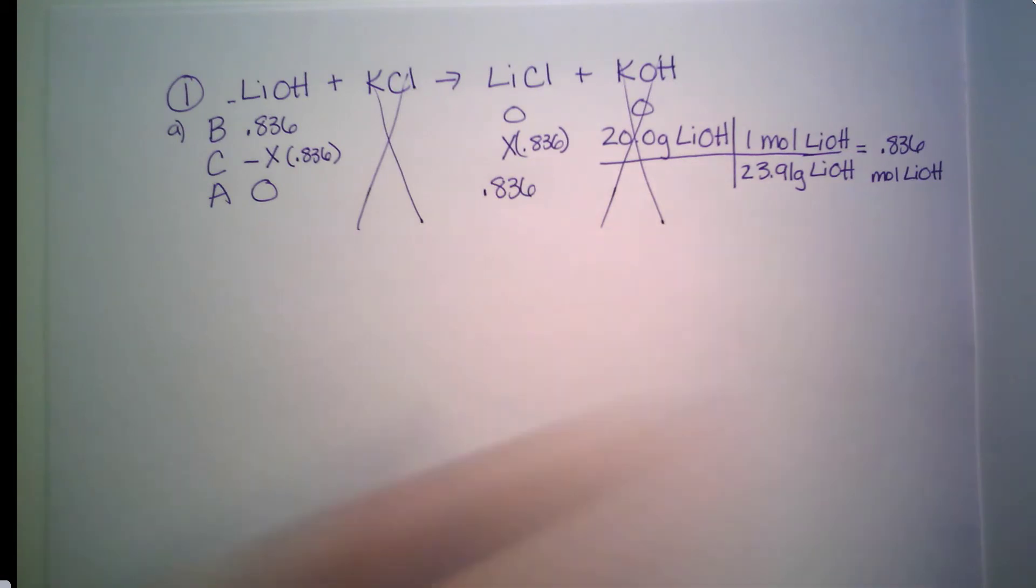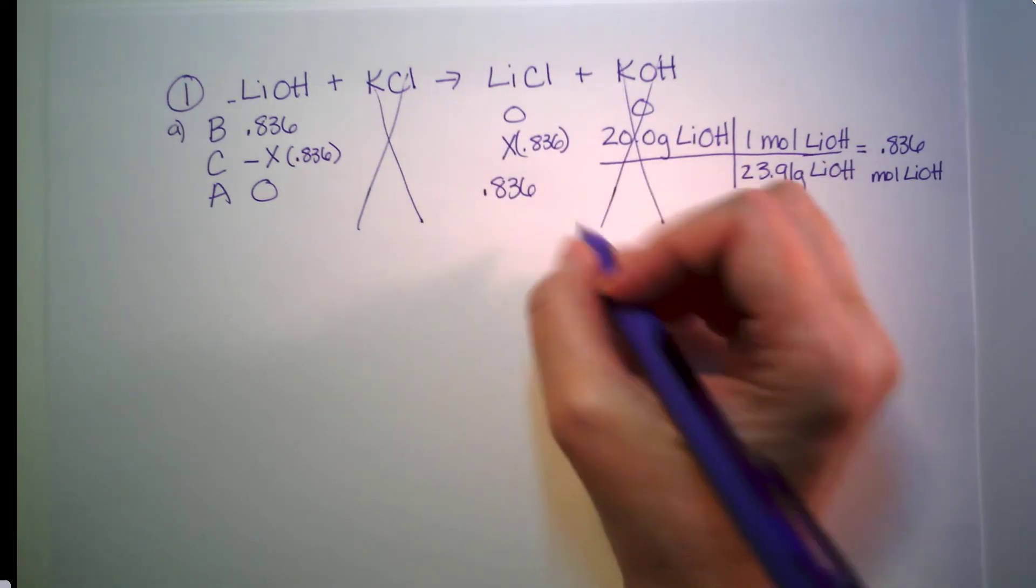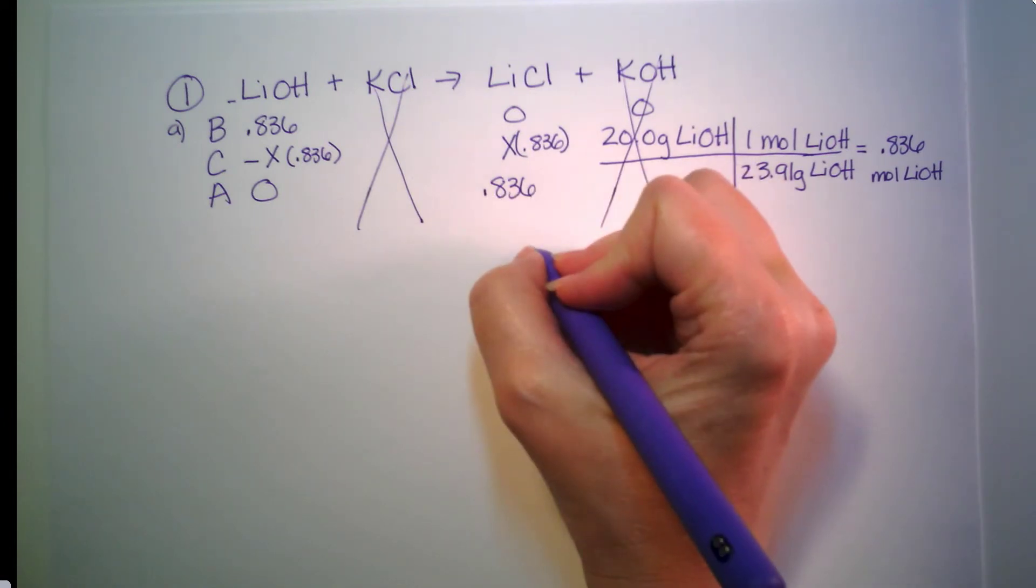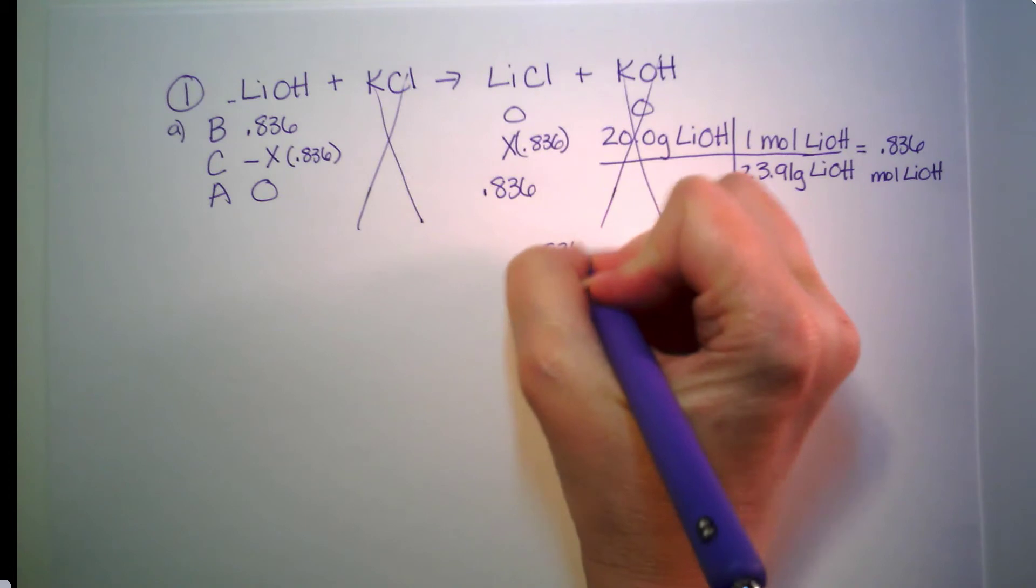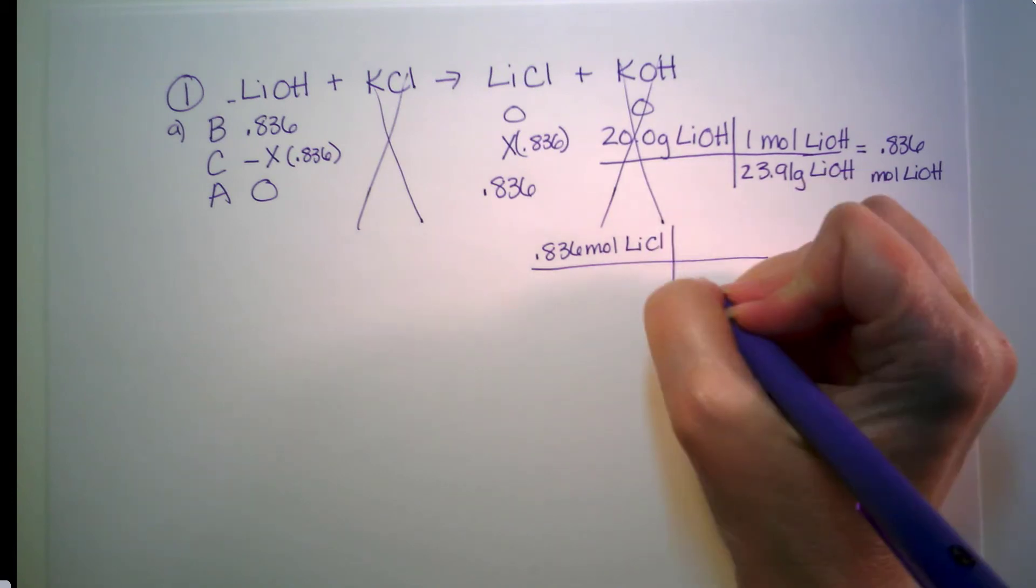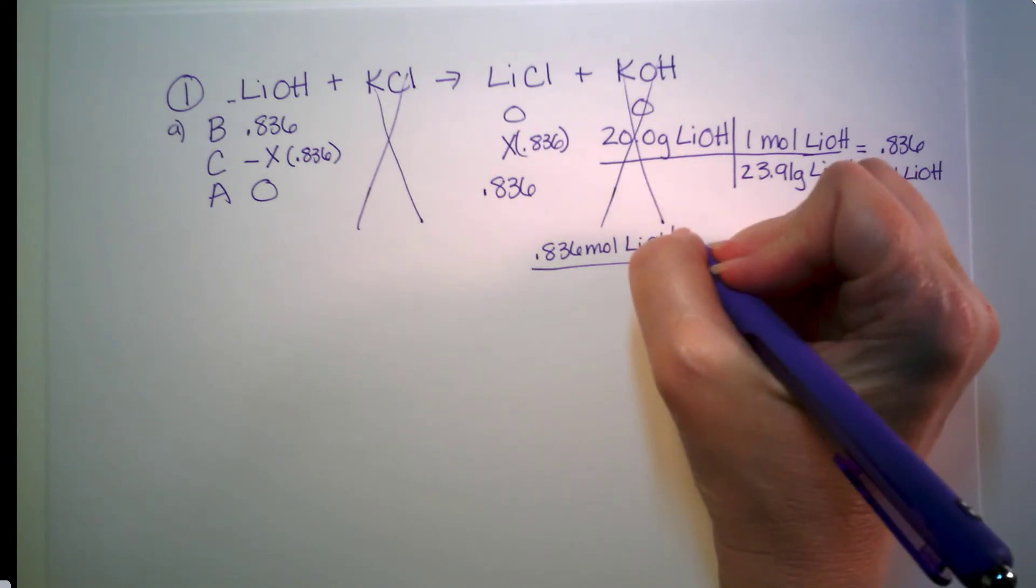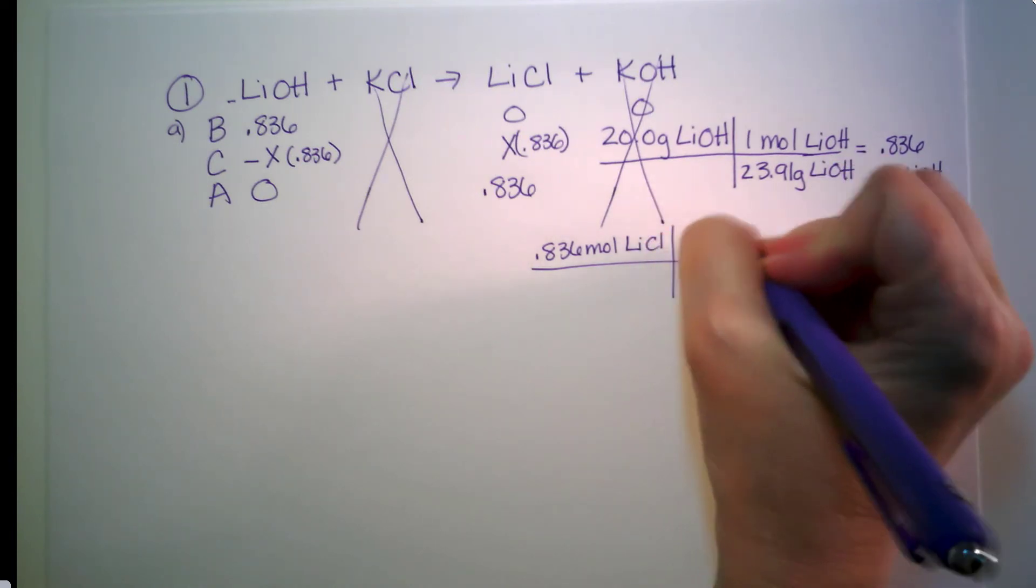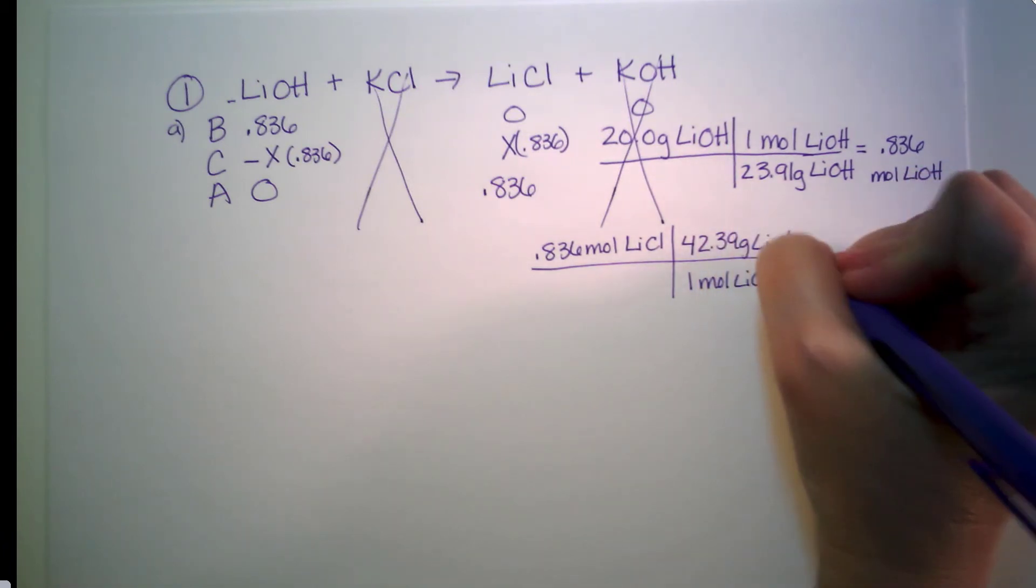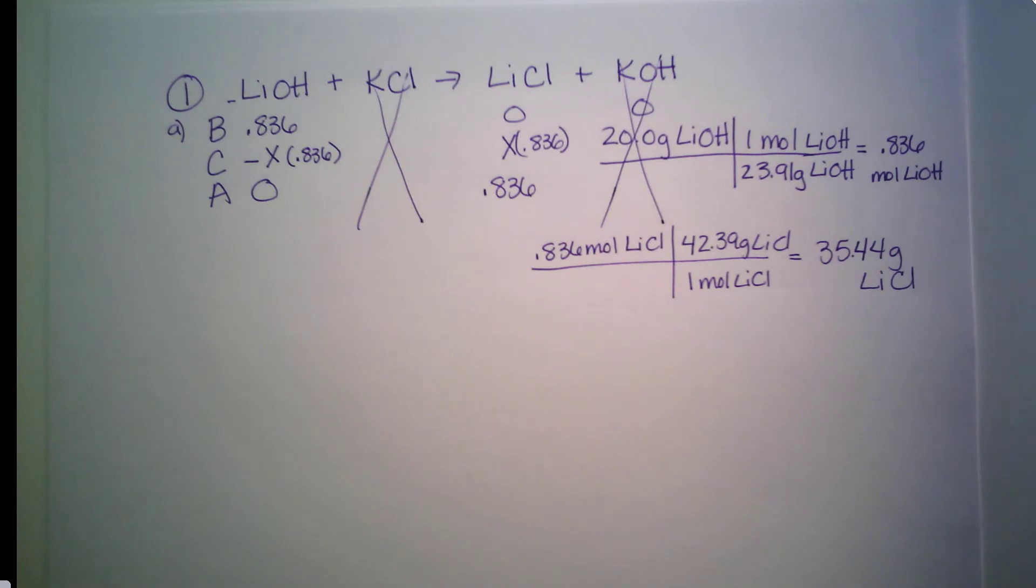Which means I made 0.836 moles of lithium chloride. But the question asks, what is my theoretical yield? So that's not my final answer. So I need to figure out how many grams that would be. 0.836 moles of lithium chloride. I'm going to look at the periodic table. I get 42.39 grams of lithium chloride. That comes out to 35.44 grams of lithium chloride.